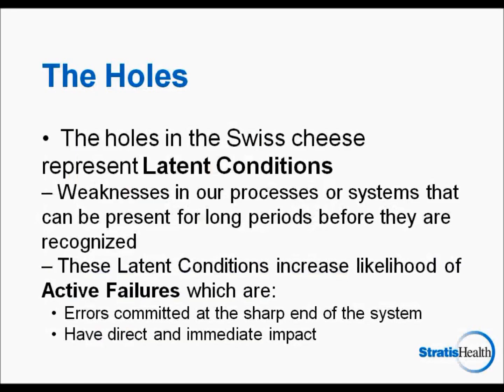So what causes these holes? We refer to the holes as latent conditions because they represent weaknesses in our processes or systems that can be present for long periods before they are recognized. They hang around until there is an active failure or unintended outcome or error. We tend to focus on the active failures because they are easily recognized and often have an immediate impact. We talk about active failures being on the sharp end of the system — like a knife, it is the sharp end that does the actual cutting, but it is the handle that directs the blade. The handle is like the latent failures. We need to understand what was behind the active failure in order to identify these holes in our barriers, because only by identifying the holes can we work to eliminate them or make them as small as possible.